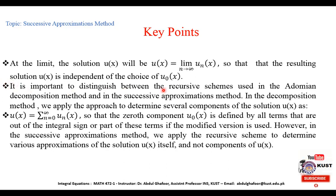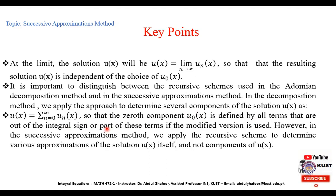It is important to distinguish between the recursive scheme in the Adomian decomposition method and in the Successive Approximations method. In the Adomian decomposition method, we determine several components of u(x) and add them: u(x) = Σ un(x). The zeroth component u0(x) is defined by all terms outside the integral sign, or part of them in the modified version. In the Successive Approximations method, we determine various approximations of the solution itself, not components.